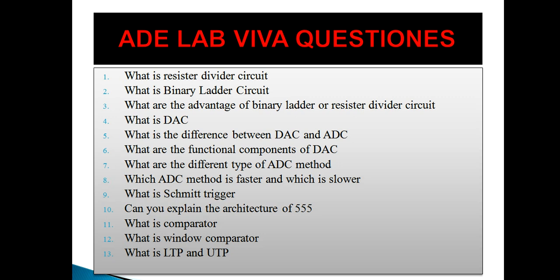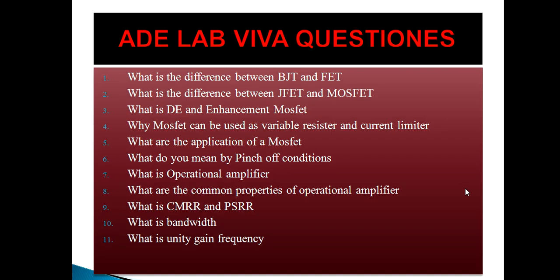What is LTP and UTP? LTP is the lower threshold point and UTP is the upper threshold point. What is the difference between BJT and FET? FET is a field effect transistor and BJT is a bipolar junction transistor. BJT is a current control device — output current is proportional to the base current. FET is a voltage control device — output current is controlled by changing the voltage at the input.